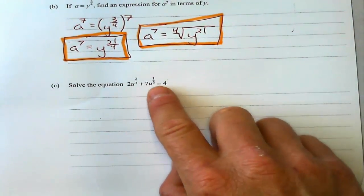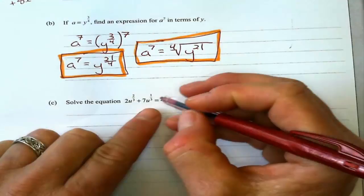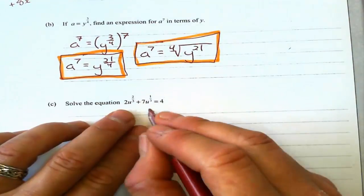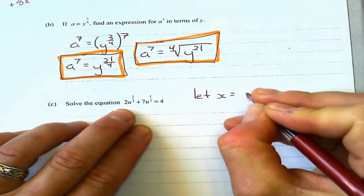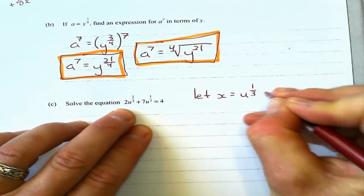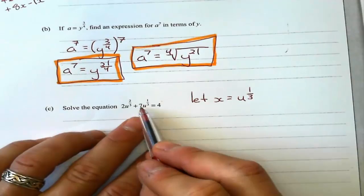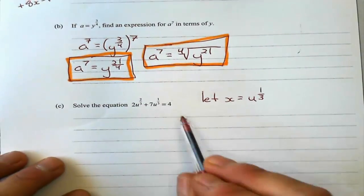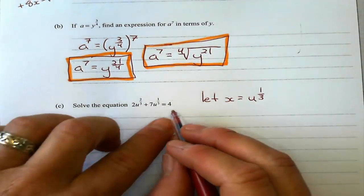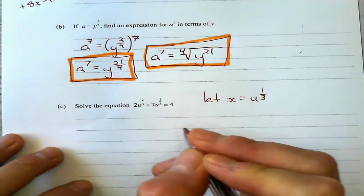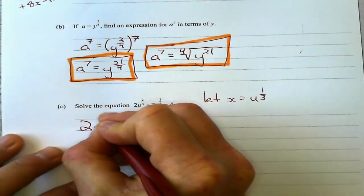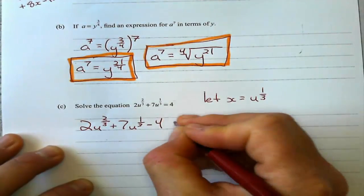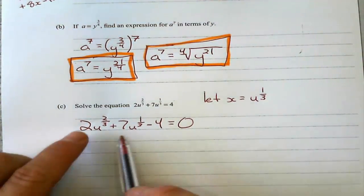Here's where we start getting into some real good algebra. This is called u-substitution, and I know this because I've done videos like this before. This is a quadratic in disguise. What I'm going to do is let x equal u to the power of 1/3. And I'll show you why. Because if I do that, that becomes 7x and this becomes 2x squared. First of all, let's set this expression equal to 0. So that's 2u to the power of 2/3 plus 7u to the power of 1/3 minus 4 equals 0.